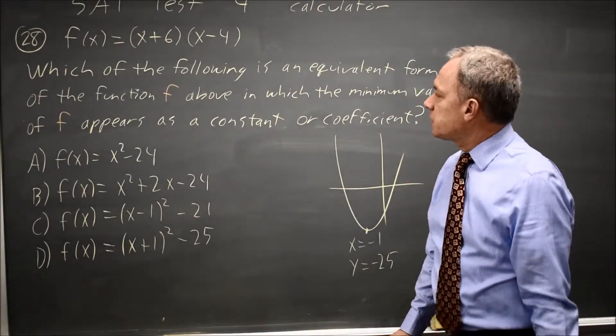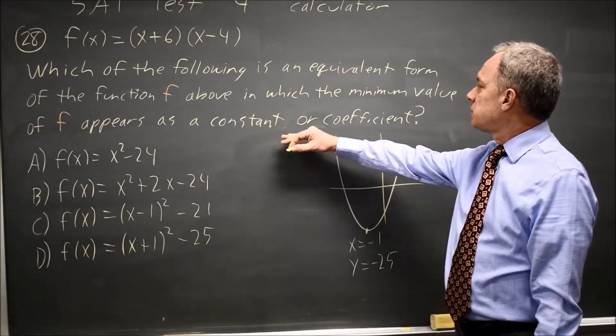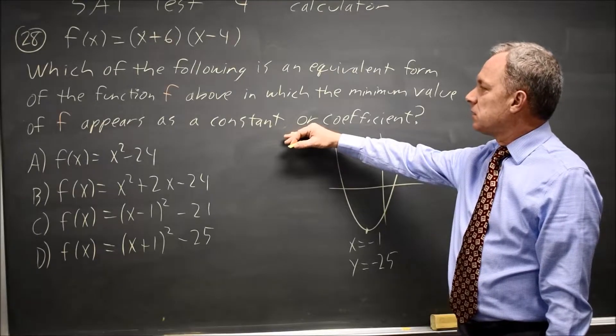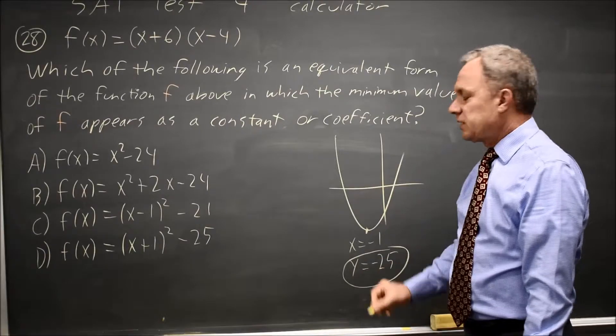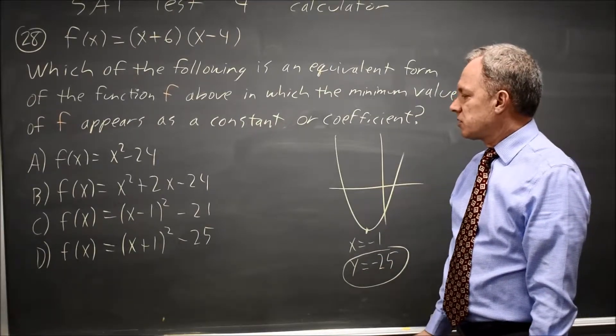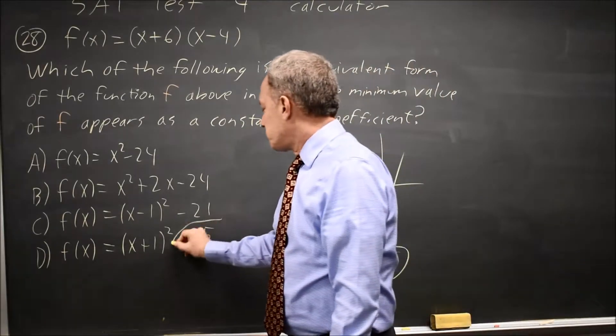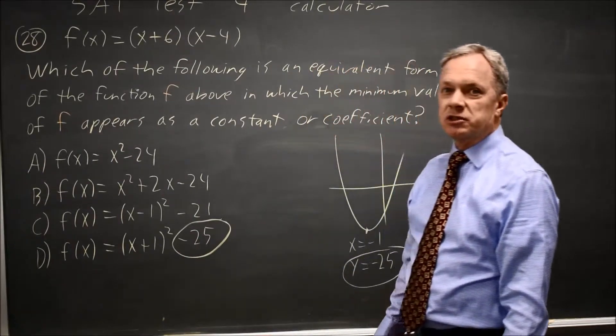Having used the calculator quickly, this is suddenly a much easier question. The minimum value of F, the minimum value is the Y, appears as a constant or coefficient. Only one choice has a negative 25, so that would be choice D.